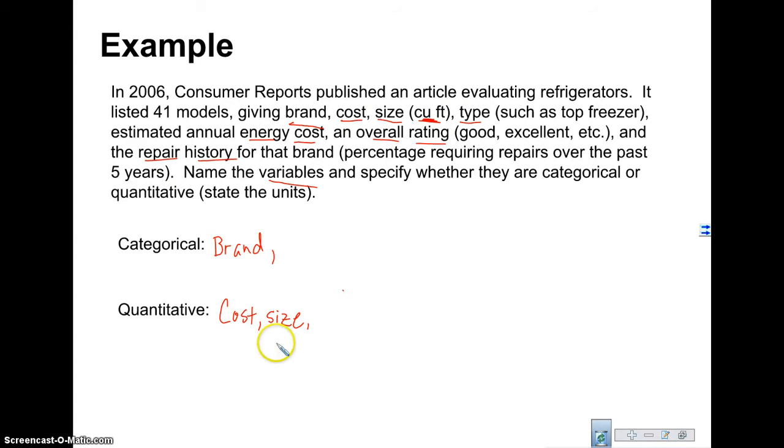You know what we need to do is we need to go back here and write the units of each one of these. So let's go ahead and cost is going to be in terms of dollars. And then we have size which is going to be in terms of cubic feet. Then we have type, such as a top freezer. That's going to be categorical. We're going to give a name to the type of freezer it is. The estimated annual energy cost, that's quantitative. We've got to write things down here. Estimated annual energy cost, and I'm guessing that's going to be in dollars as well.